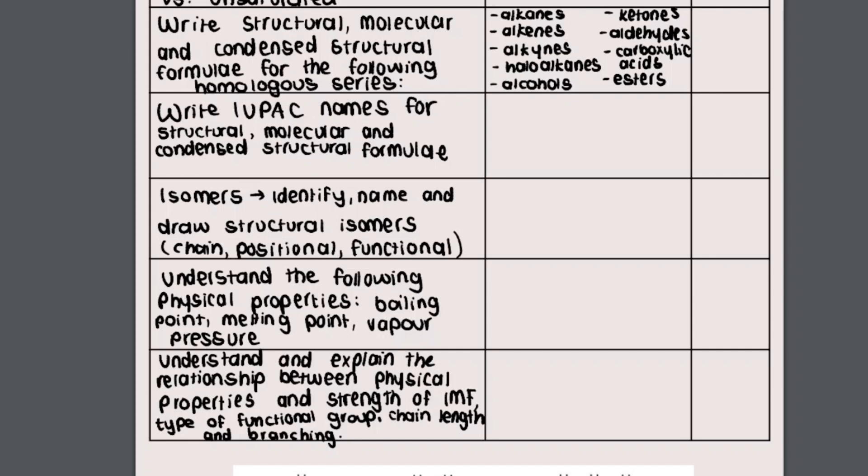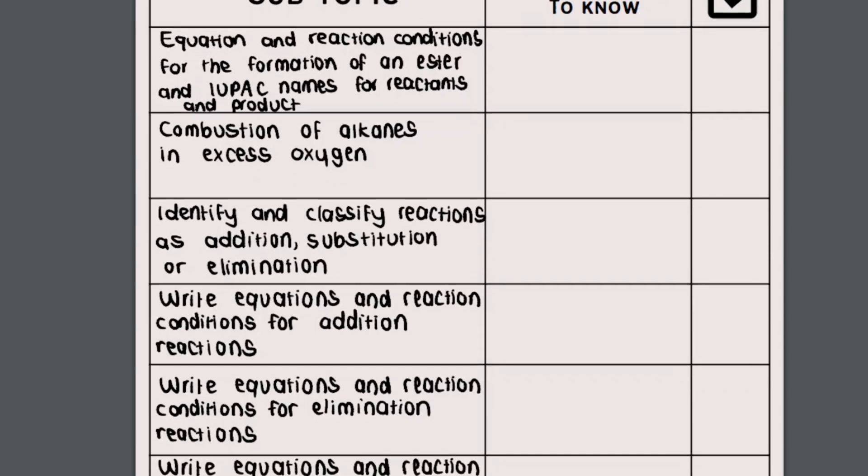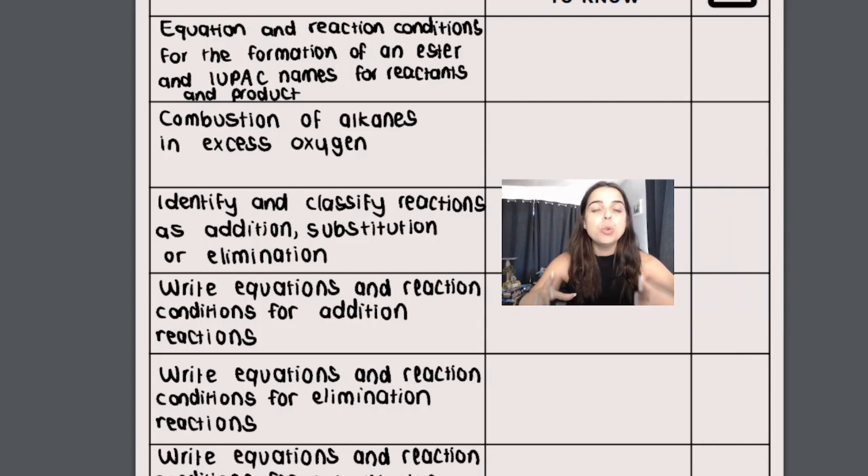Then you also need to understand how physical properties, how the different structures of these different compounds influence the physical properties. There's also a whole lot of things on reactions. Basically how do we make an ester, combustion of alkanes, so that's when alkanes react with oxygen to produce carbon dioxide and water. You get addition, substitution and elimination reactions. All of this does sound overwhelming but I promise you as your teacher introduces these concepts, as I cover them on YouTube, you'll see that it's actually really cool, really nice, interesting topic.